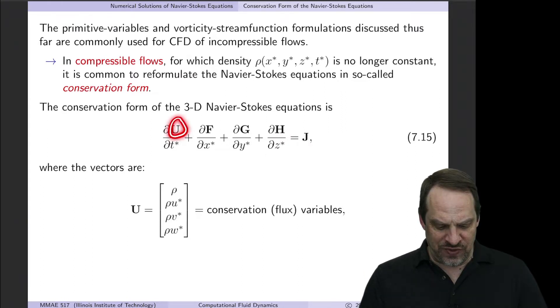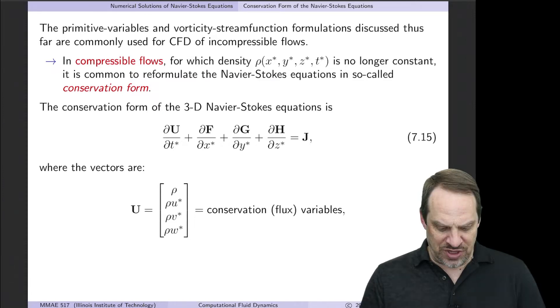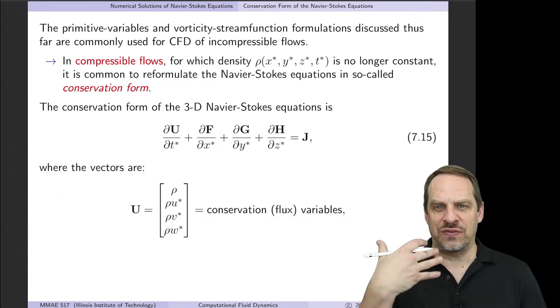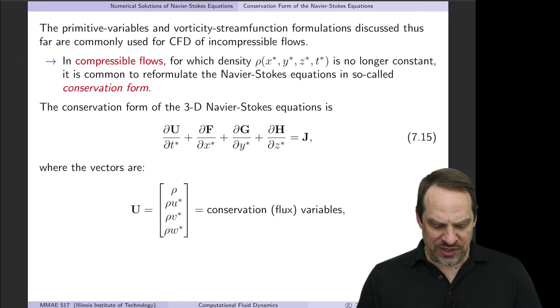So the U is a vector, and it's just a list of all the conserved variables. So we have ρ, which is the density. That comes from the continuity equation, and we have the momentum fluxes in the x, y, and z direction. So these are the conservation or flux variables, the stuff going into and out of each cell control volume in the fluid.